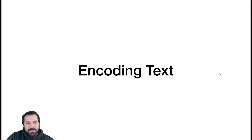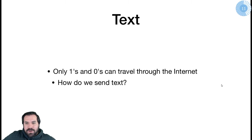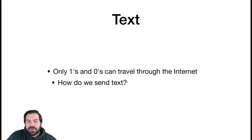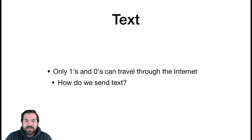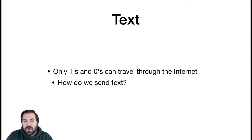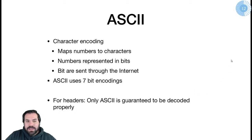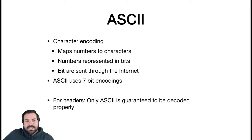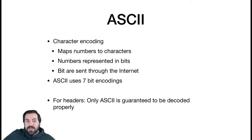Let's talk about encoding text. This is going to get more technical than MIME types — more juicy content. We only have ones and zeros and haven't really gotten to the byte level yet. So when it's just ones and zeros, just binary data, how do we send text? How do we send the letter T, for example, over the internet when all we can send is binary?